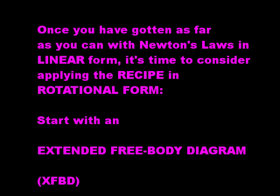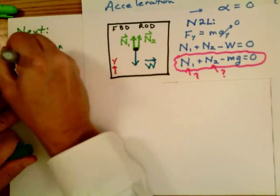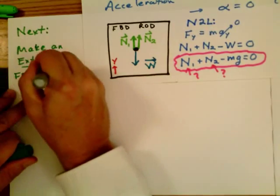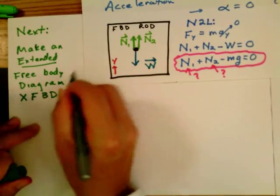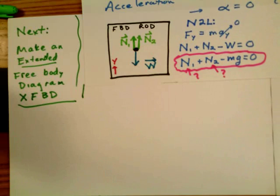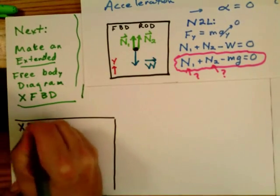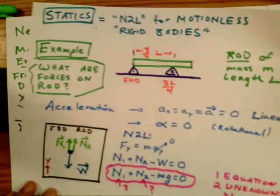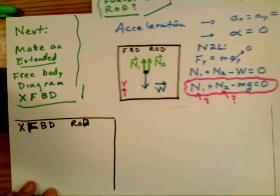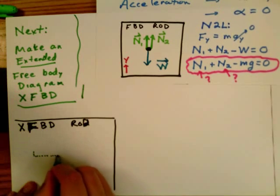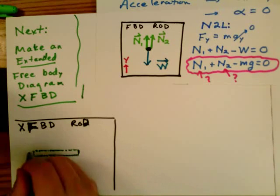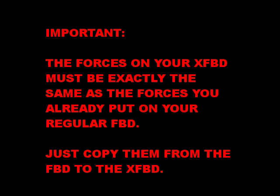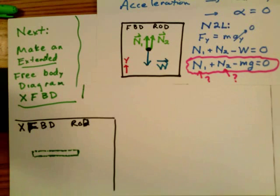So now that we've applied Newton's laws in linear form, it's time to consider applying them in rotational form. We'll start with an extended free body diagram. So what do we mean by an extended free body diagram? Well, the idea is that we regenerate the same free body diagram that we just did, but we extend it so that instead of calculating forces, we can calculate torques. So the main idea is we draw a picture of the object. Since it's an extended object, we need to draw a picture.